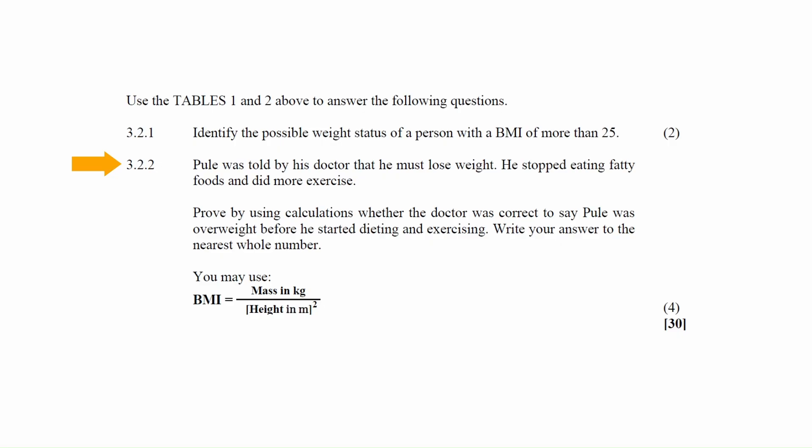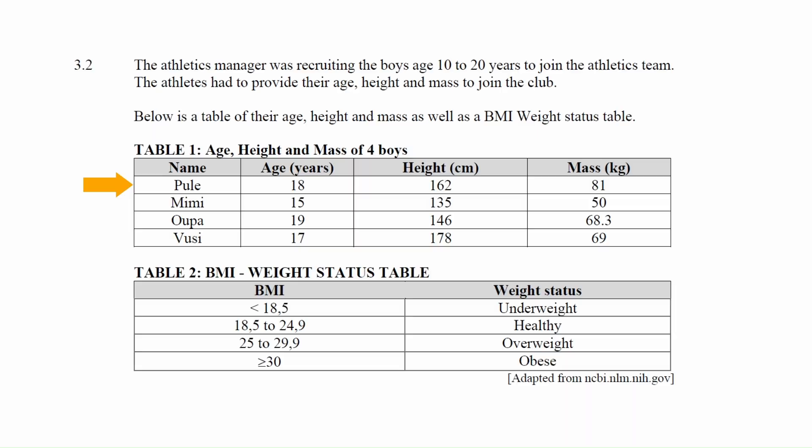In question 3.2.2, Pule was told by his doctor to lose weight. He stopped eating fatty foods and exercised more. Prove by calculation whether the doctor was correct to classify Pule as overweight before he started dieting. The formula is: BMI = mass (kg) ÷ height (m)². Pule's age, height, and mass are given in Table 1.